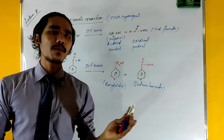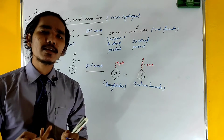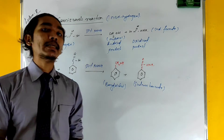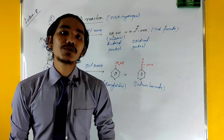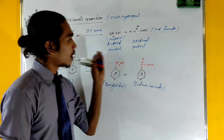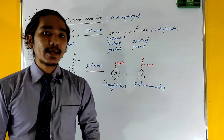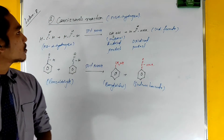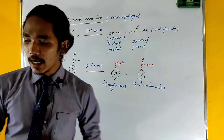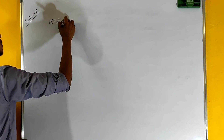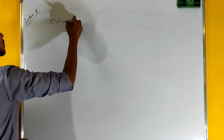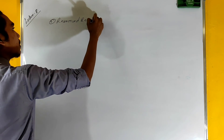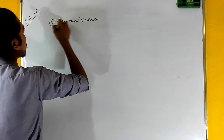This is the Cannizzaro reaction in detail — cross-Cannizzaro, intramolecular Cannizzaro reactions — and all the details are covered. Let me explain briefly. The next reaction is the Rosenmund reduction.